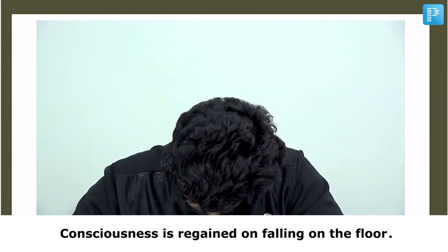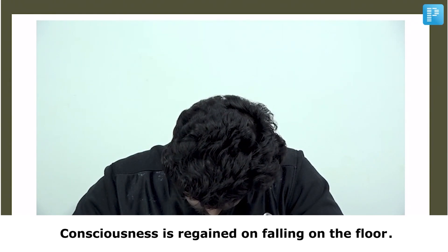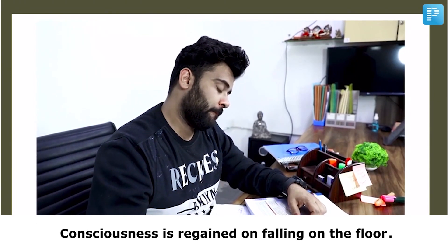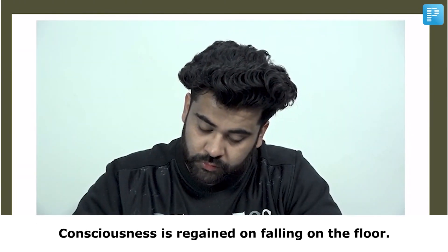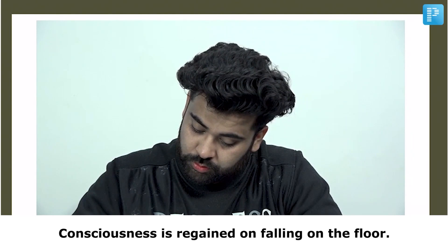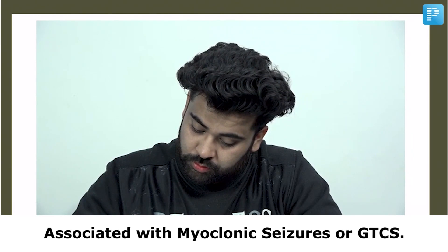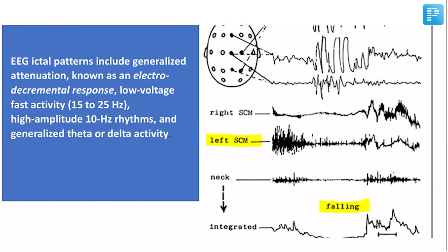Consciousness in these patients is regained on falling. Remember, in absence seizures there is no post-ictal deficit, but atonic seizures can involve loss of consciousness, though the duration can vary. A large number of these cases may also be associated with myoclonic seizures and GTCS. For diagnosis, you will perform an EEG showing an electro-decremental response, and an EMG will show a sudden decrease of tone in the sternocleidomastoid, explaining the head nodding. Head injuries are very common in patients of atonic seizures.